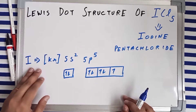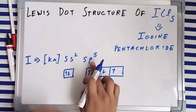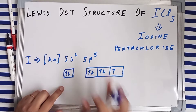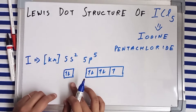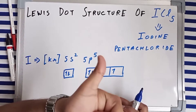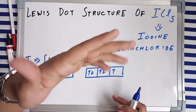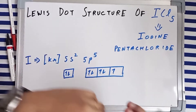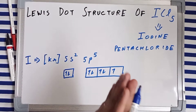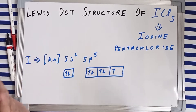The electronic configuration of iodine is the inert configuration of krypton, then 5s² and 5p⁵. Since iodine is a fifth period element, it has a vacant d subshell as well as a vacant f subshell. We won't need the f subshell — we'll be able to handle the Lewis dot structure of ICl₅ by using just the vacant 5d subshell of iodine.